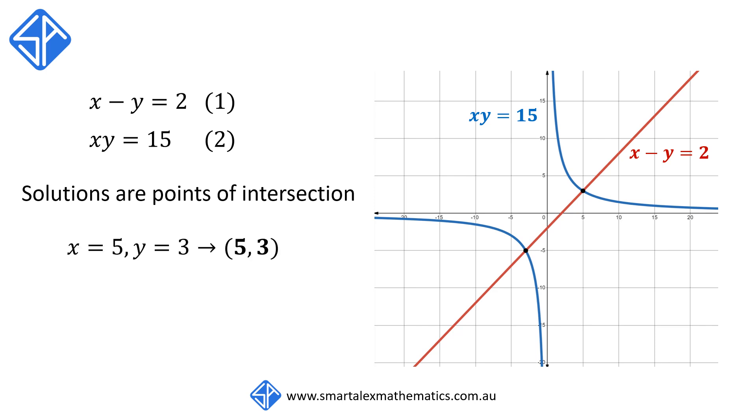So remember, when we've got x is equal to 5 and y is equal to 3, this corresponds to this first point of intersection, 5, 3. And our second set of solution, x is equal to negative 3 and y is equal to negative 5, corresponds to this second point of intersection with coordinate negative 3 and negative 5.